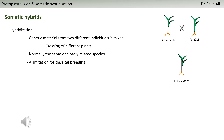Before going to somatic hybridization, let's talk about hybridization. Normally in plant breeding, you have the possibility to cross two different plants that have differences in their genetic makeup. You want to combine them and transfer the good traits of one plant to the other. For example, you have a wheat variety Atta Habib, developed by our institute, and another variety PH 2015.